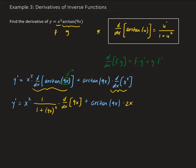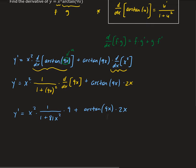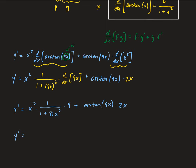This gives us x squared times 1 over 1 plus 81x squared, times 9, plus arctan of 9x times 2x. And so this is equal to 9x squared all divided by 1 plus 81x squared, plus 2x arctan of 9x.